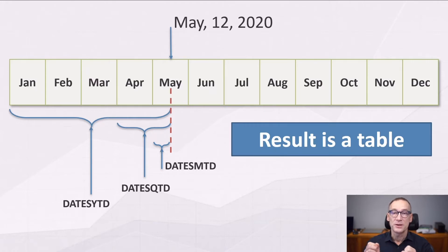DatesYTD returns the year-to-date. So you see in this example that if the filter context contains one date only, the 12th of May 2020, DatesYTD returns all the dates from the 1st of January up to the 12th of May.